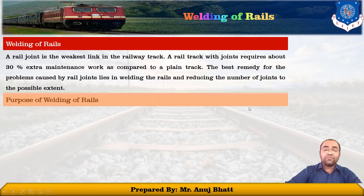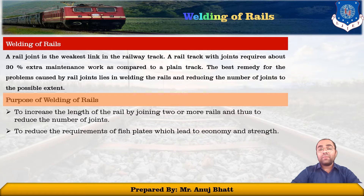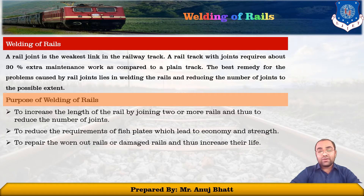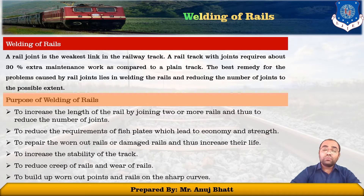The purpose of welding of rails is to increase the length of the rail by joining two or more rails and thus to reduce the number of joints. To reduce the requirements of fish plates, which leads to economy and strength. To repair the worn-out or damaged rails and thus increase the life of the rails. To increase the stability of the track. To reduce the creep of rails and veering of the rails. To build up the worn-out points and rails on the sharp curves.